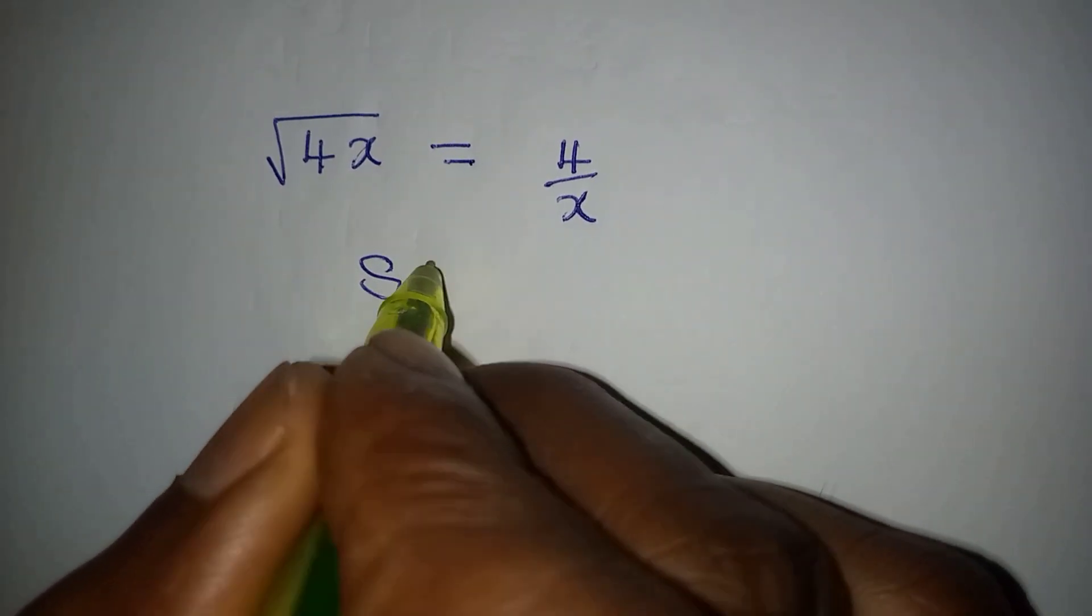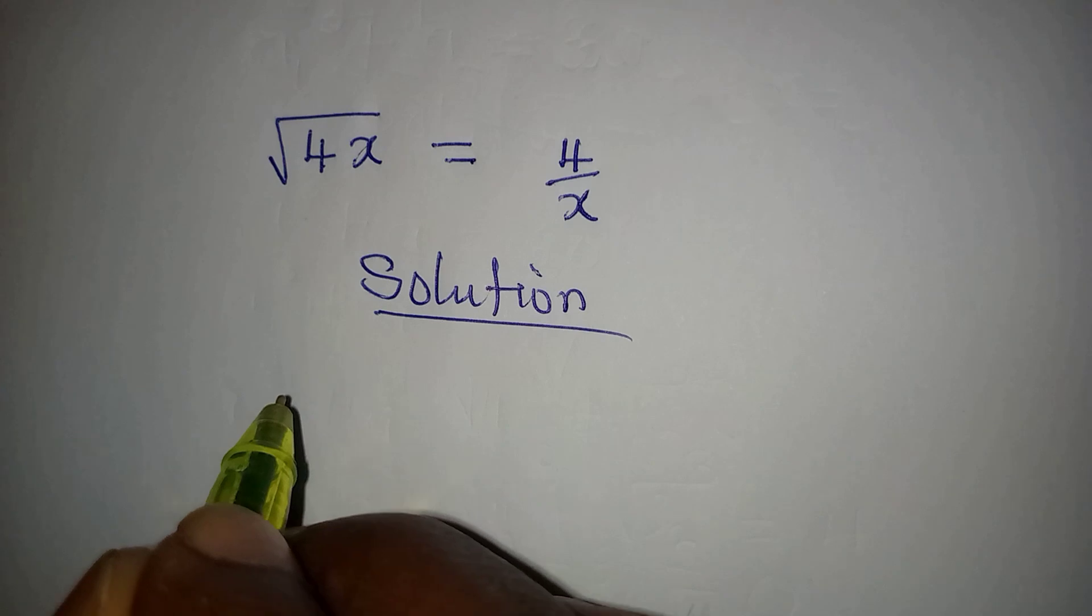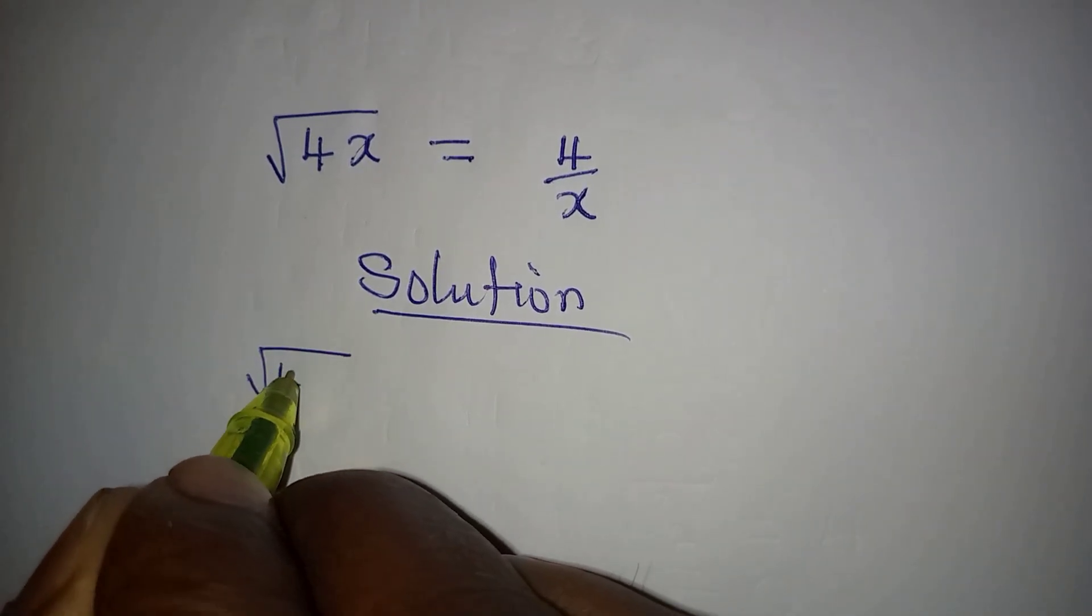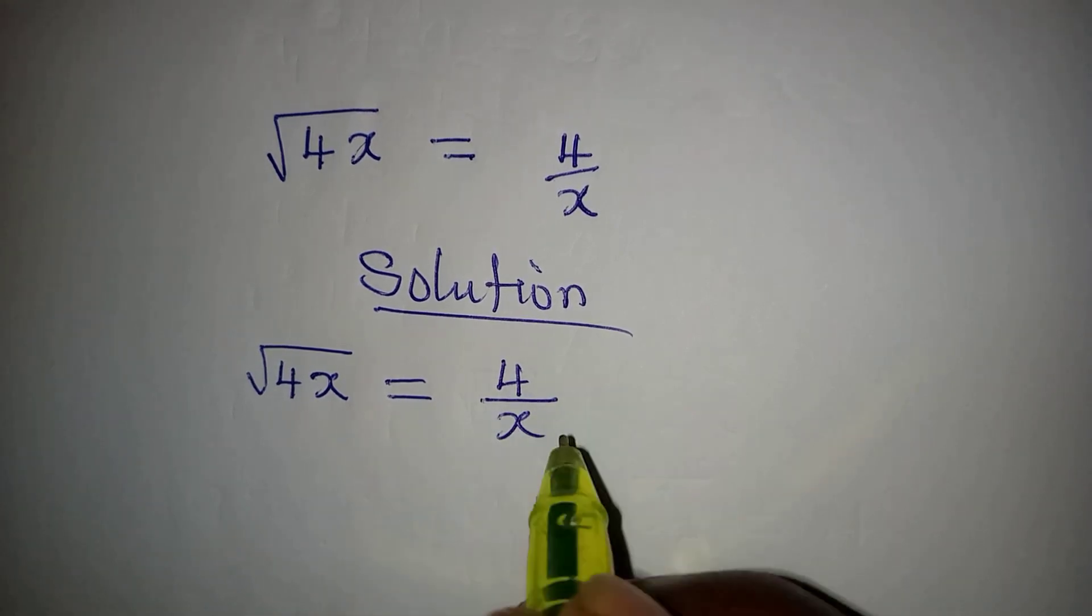Hello everyone, let's provide a solution to this problem: square root of 4x equals 4 over x.